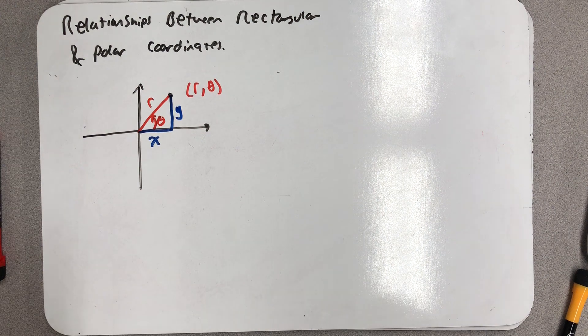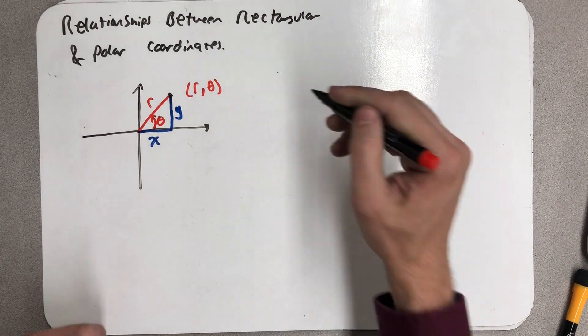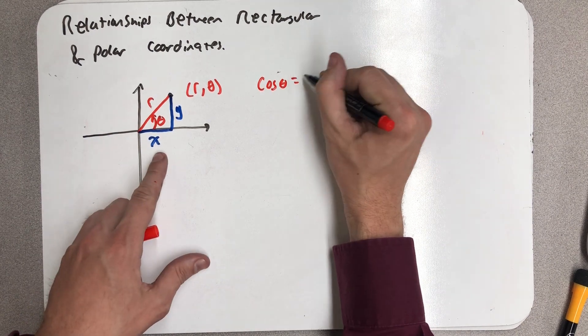Let's just think about this triangle for a moment. It's a right triangle, and I could think about cosine of the angle θ, and that would be x over r.